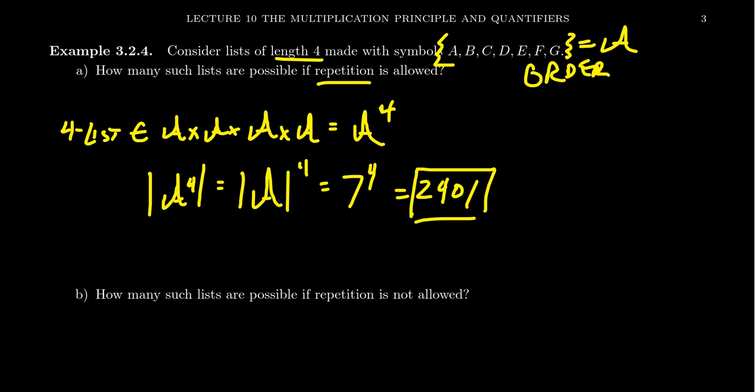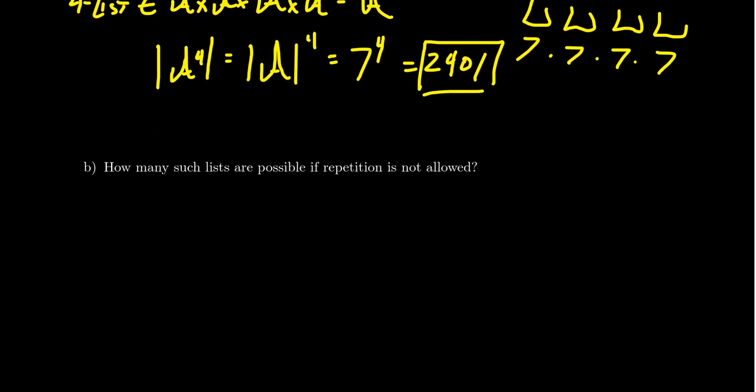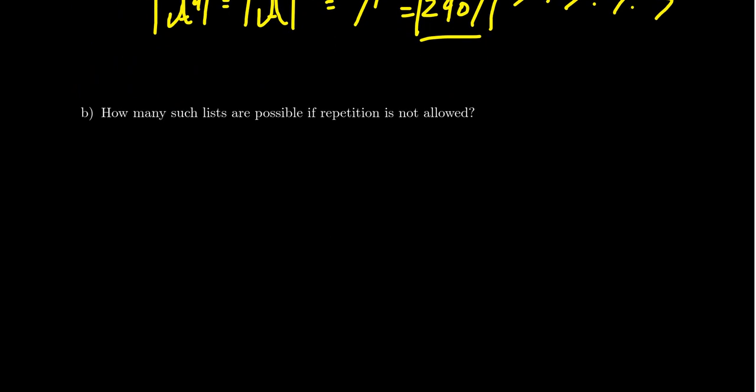Now let's change the problem slightly. We still want lists of length four, but we don't allow repetition — you can't reuse a letter previously used. The reason this needs separate consideration is that without repetition, the decisions appear to no longer be independent: if your first letter is A, the second letter can't be A. So it seems the multiplication principle doesn't apply here.